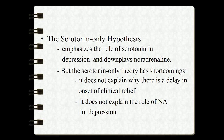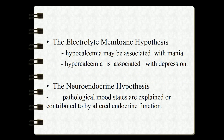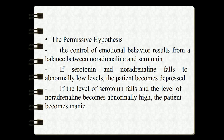The permissive hypothesis proposes that control of emotional behavior results from a balance between noradrenaline and serotonin. If both serotonin and noradrenaline fall to abnormally low levels, the patient becomes depressed. If serotonin falls but noradrenaline becomes abnormally high, the patient becomes manic. This allows differentiation between depression and mania based on neurotransmitter levels.